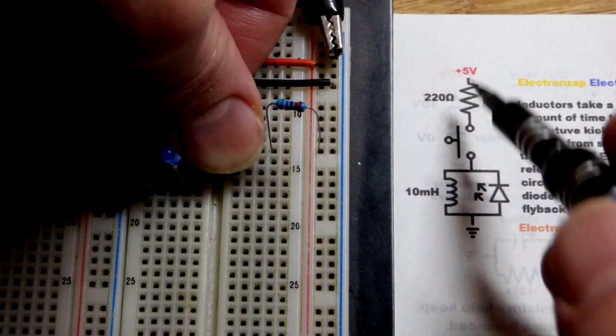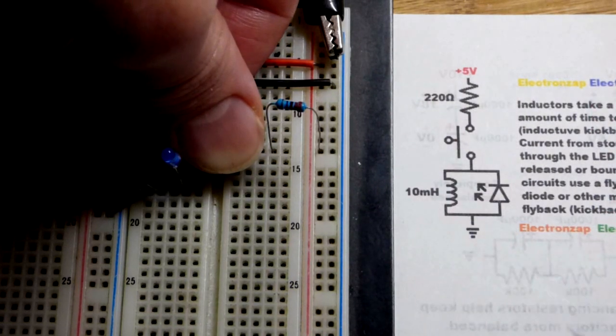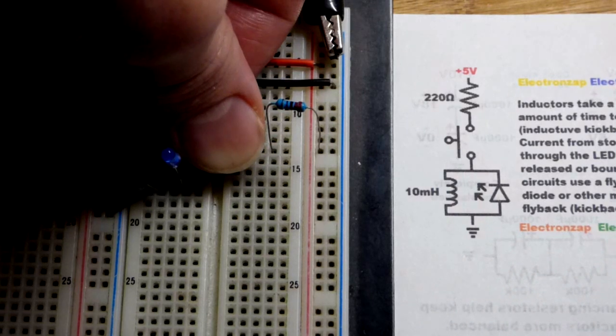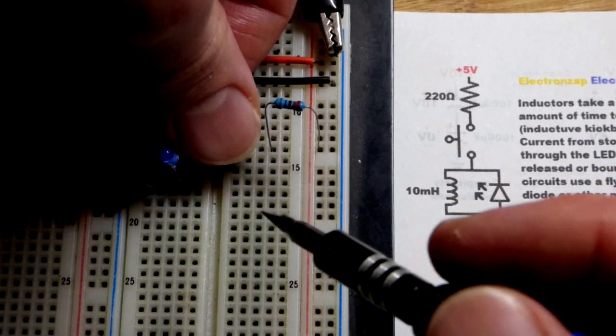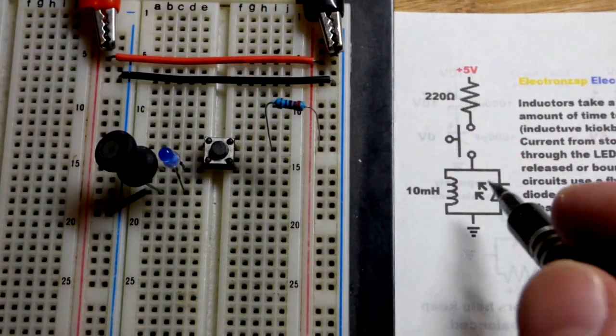Now current flows to the inductor. It took a little bit of time for the current to start flowing, but faster than we can sense. So it's not instant, but it's still pretty quick. Now when I release the button, you saw the LED flash.